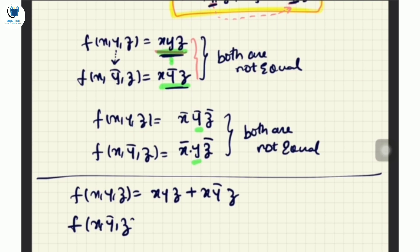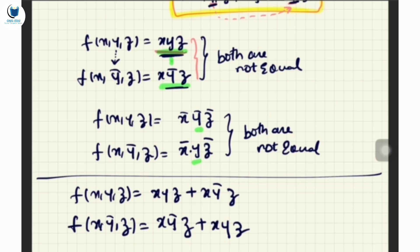Now replace y with y_bar. If we replace y with y_bar in xyz + xy_bar·z, it becomes xy_bar·z + xyz. Interestingly, both are equal now. Please understand — now both are equal!